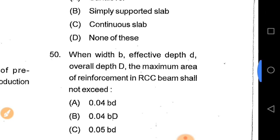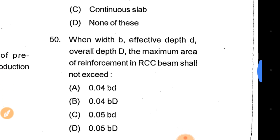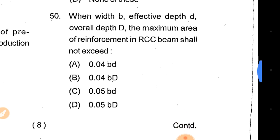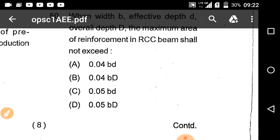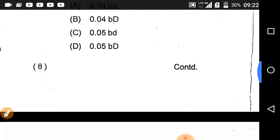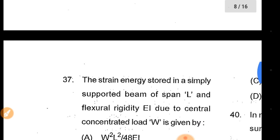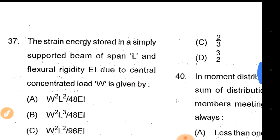Where B is the width and D is the effective overall depth, the maximum area of reinforcement in an RCC beam shall not exceed 0.04BD. This is a very important value.